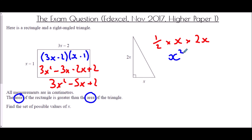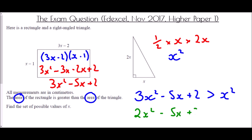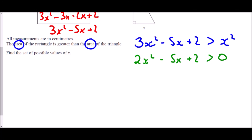We were told the area of the rectangle is greater than the area of the triangle, so we set up the inequality: 3x squared take away 5x plus 2 is greater than x squared. To solve this, we want it in the form greater than 0, so we subtract x squared from both sides to get 2x squared take away 5x plus 2 is greater than 0. Now we factorise: we need two numbers that multiply to make 4 (from 2 times 2) but add to make negative 5 — both must be negative, giving negative 1 and negative 4.